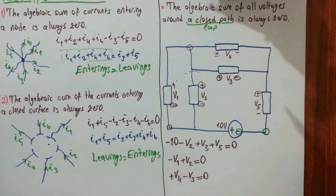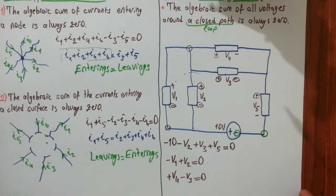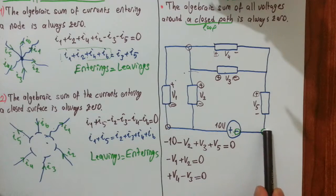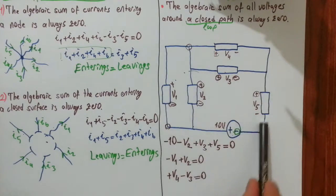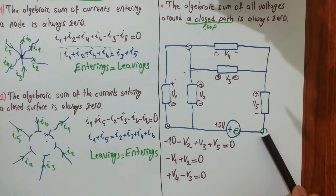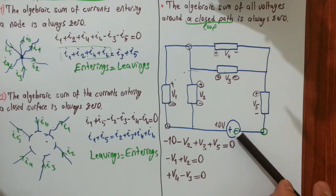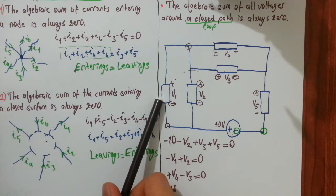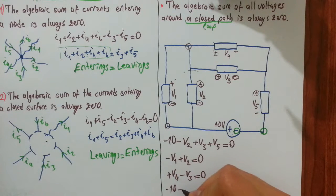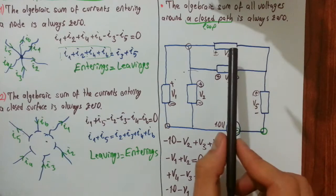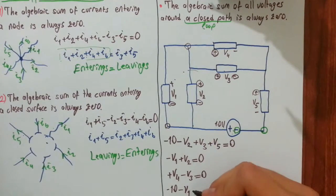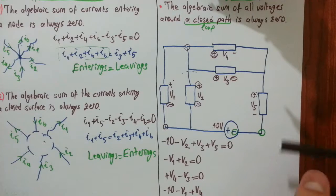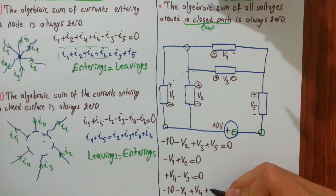There are two more loops in this circuit, but I will apply KVL in one more. Starting from this green dot, we enter the voltage source from its minus terminal — minus 10. The second component we enter from its minus terminal — minus V1. The third component we enter from its plus terminal — plus V4. The last component we enter from its positive terminal — plus V5. We equate this whole expression to zero by KVL.